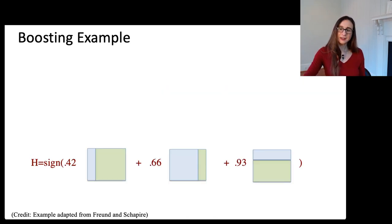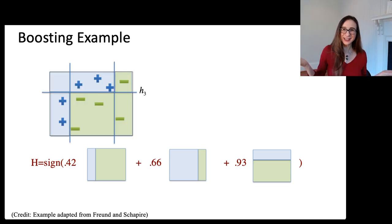Now, this is the final combined classifier here, where it took those three classifiers that it constructed and then weighted each one by alpha. And then, lo and behold, the final combined classifier looks beautiful. It correctly classified all of the data points.